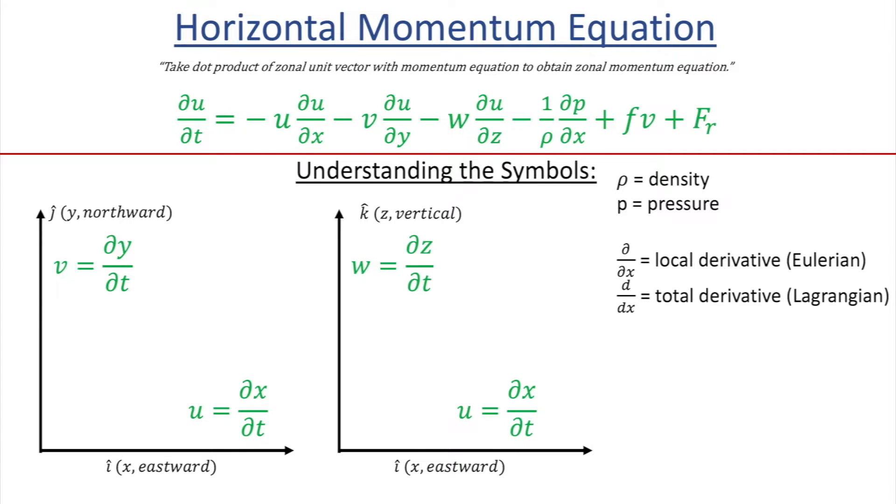And something to think about is, see how this symbol is like that versus just a regular d? It actually makes a pretty big difference when you're dealing with these kinds of equations. In this equation, you see it all looks kind of like that one. And what that is, it's a partial derivative, and it's the local derivative, also called Eulerian. You'll probably hear it called that sometimes. And what this means is it's at a fixed place, and you're looking at the change of some kind of variable. If you see d/dx, this could also be called total derivative or Lagrangian. And that is following the parcel. It's just something to keep your eye out for that those different terms actually do make a difference.